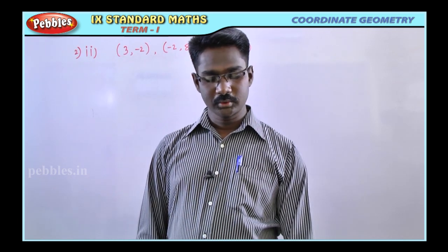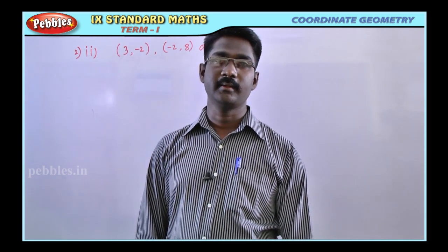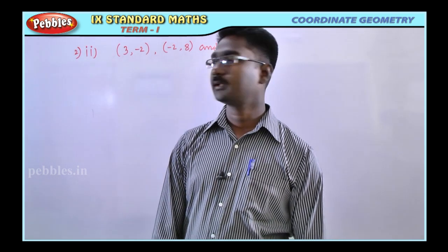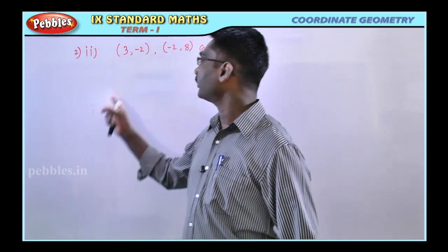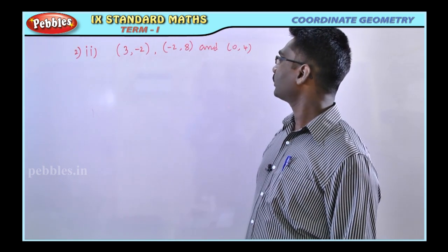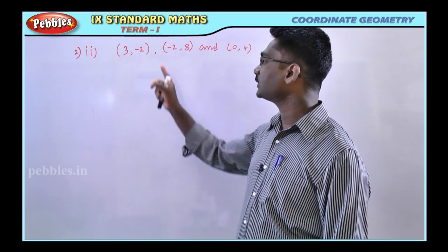Second problem: show that the following points are collinear. Here are three points. The coordinates are: first point (3, -2), second point (-2, -8), and third point (0, -4). Three points.